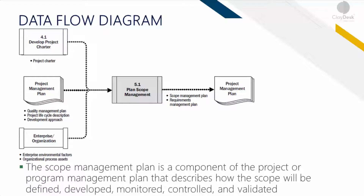Here's a quick data flow diagram. You have the project charter coming from the previous chapter, which is made part of the project plan itself for the organization. The scope management plan is created, and then you end up detailing out the requirements of the management plan — which is a component of the project or program management that describes how the scope will be defined, monitored, developed, controlled, or validated.